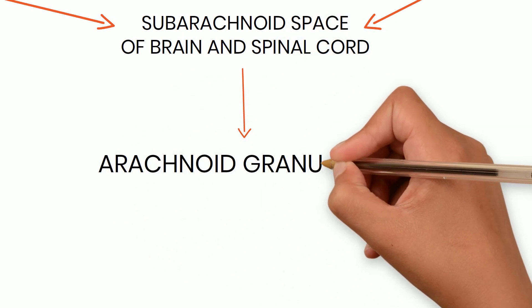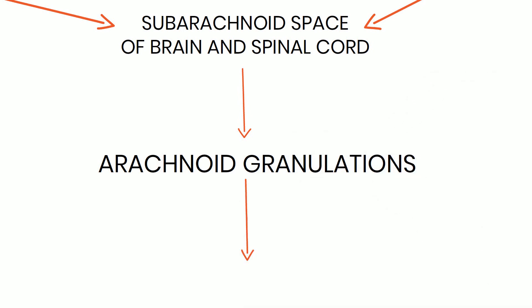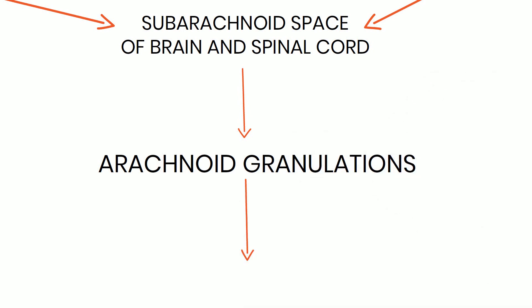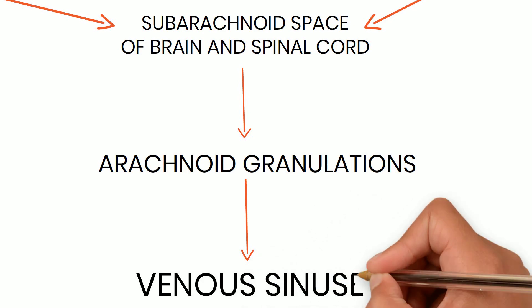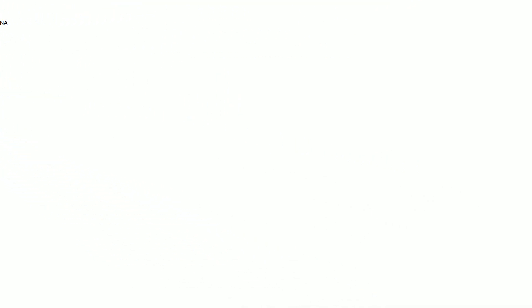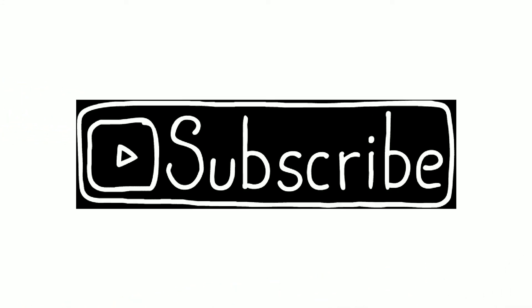Through the arachnoid granulations, CSF is absorbed into the venous sinuses.